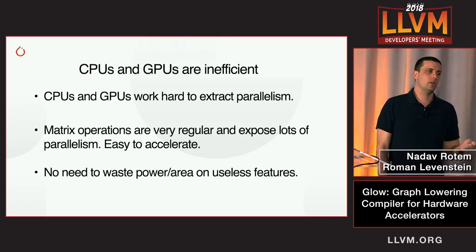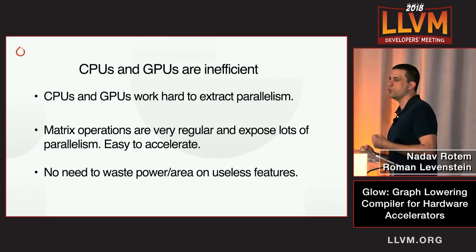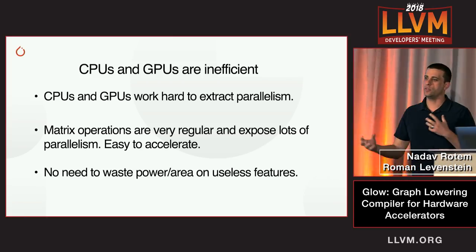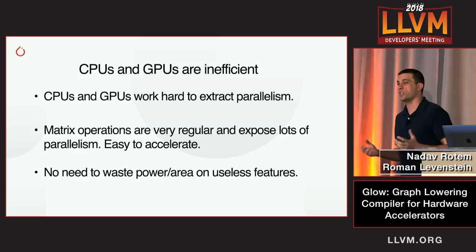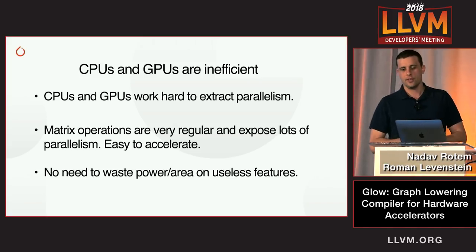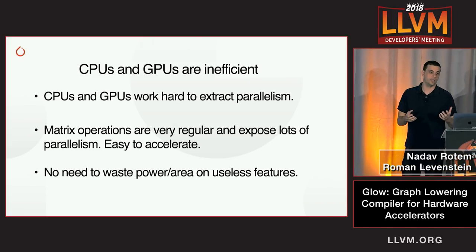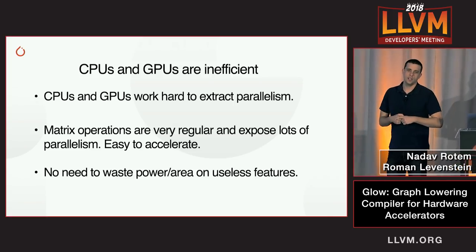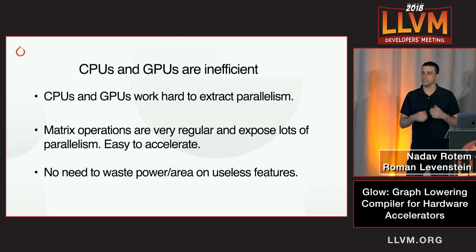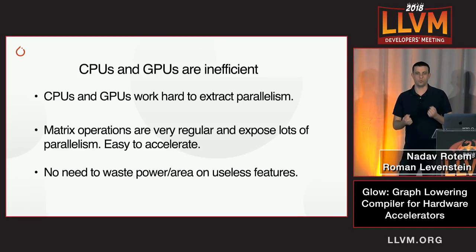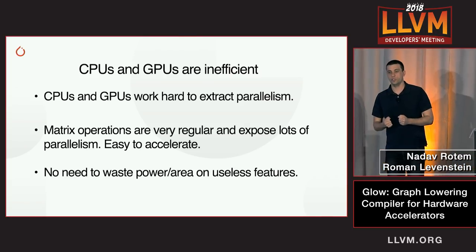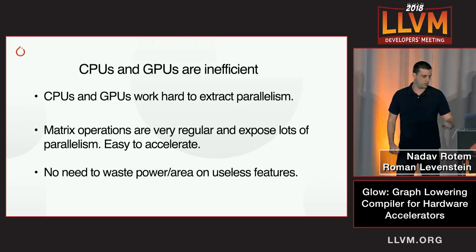Part of the reason is that CPUs and GPUs solve a different problem. The key to performance is parallelism, and CPUs and GPUs work really hard to extract parallelism from C programs. Standard languages like C or JavaScript have features like exception handling, vtables, and other things that require load-store forwarding optimizations, branch predictors, and out-of-order engines — none of which are necessary when optimizing neural networks. Neural networks are really easy to optimize, but you need a different architecture. CPUs and GPUs are not the right answer; you need accelerators.